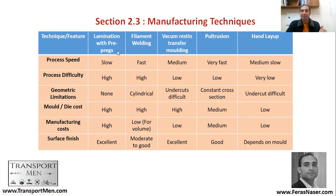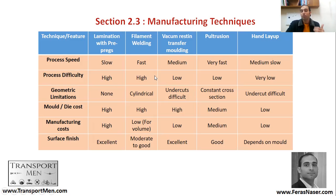For lamination with prepreg: process speed is slow, difficulty is high, but there is no geometric limitation — you can get any shape. Mold cost and manufacturing cost are both high, but the surface finish is excellent. For filament winding: it's a fast process but high difficulty, and you end up with a cylindrical geometric shape. Mold cost is high, manufacturing cost is low for volume, and surface finish is moderate to good.